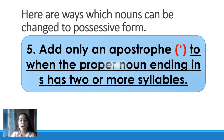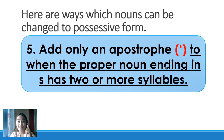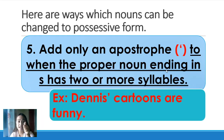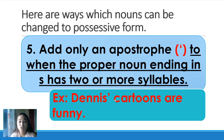Number five: add only an apostrophe when the proper noun ending in S has two or more syllables. Previously with one syllable we added apostrophe S. This time with two or more syllables, we add only an apostrophe. Example — Dennis. Dennis has two syllables and ends with S. So we add only the apostrophe: 'Dennis' cartoons are funny.'